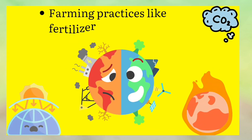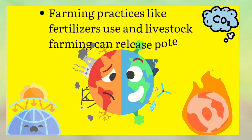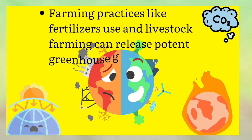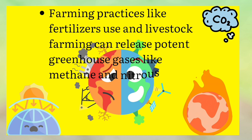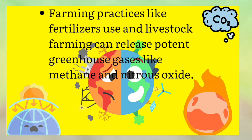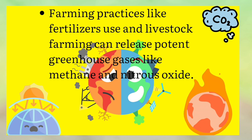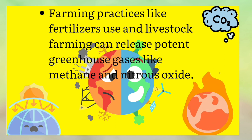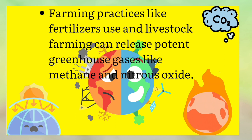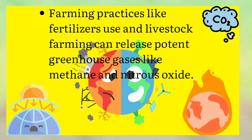Farming practices like fertilizer use and livestock farming can release potent greenhouse gases like methane and nitrous oxide. Methane is produced in many combustion processes and also by anaerobic decomposition — for example, in flooded rice paddies and in pig and cow stomachs.